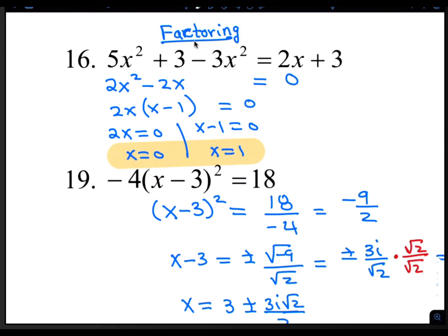I chose the factoring method for number 16. So I want the right side to become 0. I'll subtract 2x from both sides and also subtract 3 from both sides. The result is going to be 2x squared minus 2x. Then we factor out 2x, the common factor, leaving you with x minus 1. Now we set both of those equal to 0. So 2x equals 0, and when you solve that, you get x equals 0. Also, solve x minus 1 equals 0, so you get x equals 1.